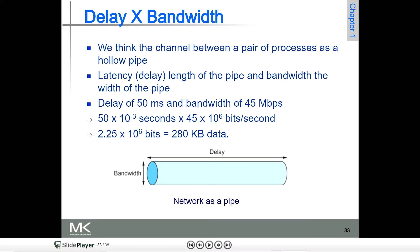The delay of 50 milliseconds and bandwidth of 45 Mbps — take these into consideration carefully. Whatever the 50 milliseconds is there, first you have to convert that to seconds, that is 50 into 10 to the power of minus 3 seconds.